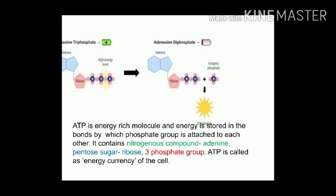Next is ATP — the energy currency. ATP or adenosine triphosphate is an energy-rich molecule. There are three components in ATP: adenine, a nitrogenous compound; pentose sugar, ribose (C5H10O5); and three phosphate groups.